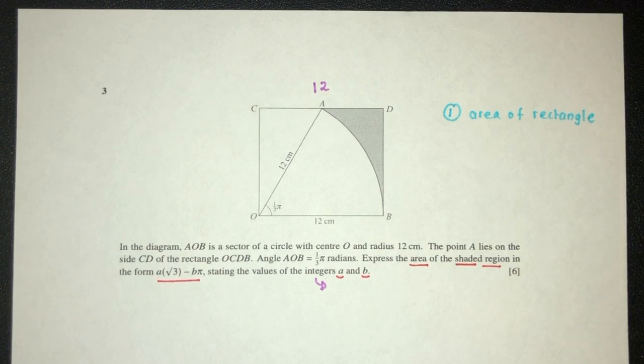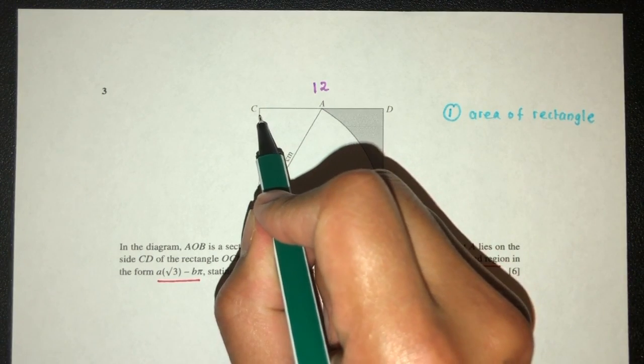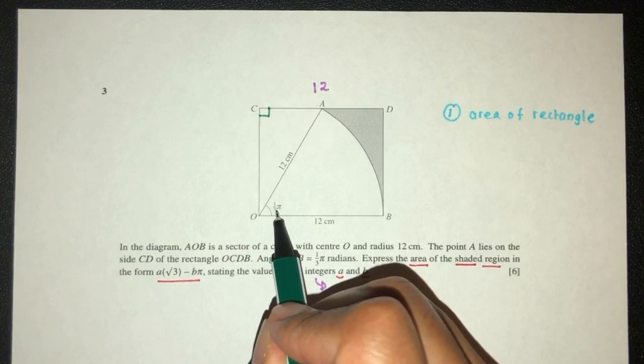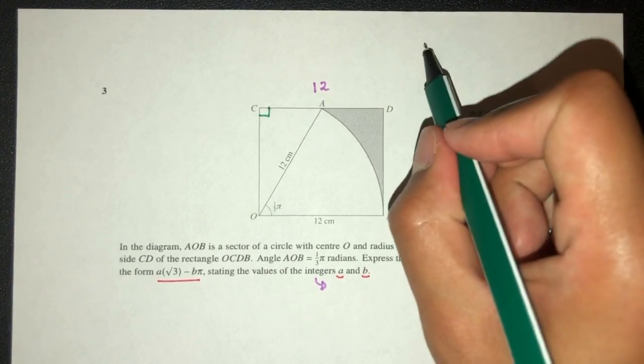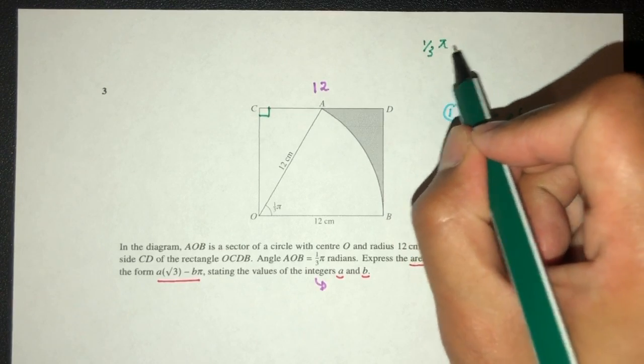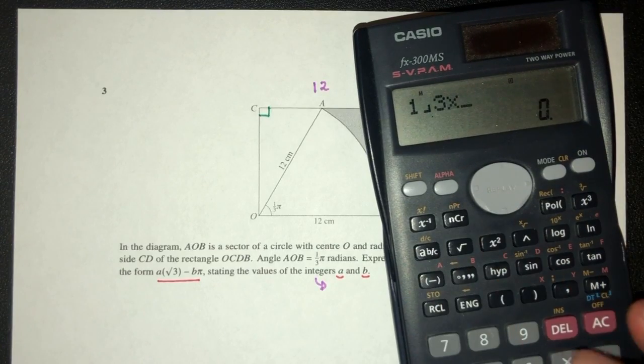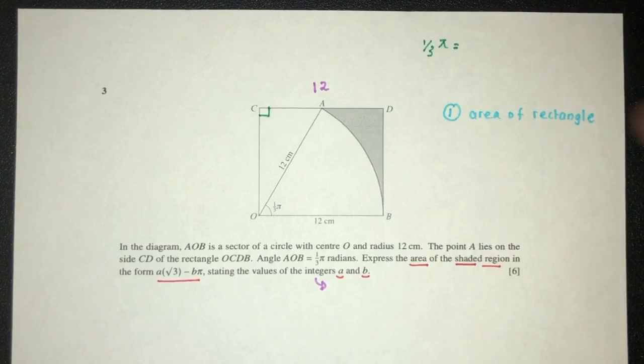Now, given that this is a rectangle, this have to be 90, 90, 90, 90. This is 1/3 pi. If you were to convert this to degrees, what is that? 1/3 times 180. This is 180 degrees. That should be 60 degrees.